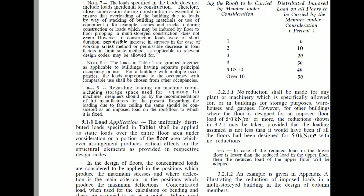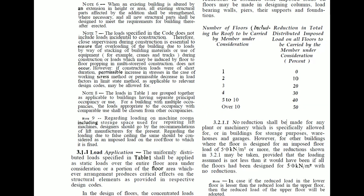However, for other buildings where the floor is designed for an imposed load of 5 kN/m² or more, the reduction shown in Clause 3.2.1 may be applied, provided that the loading assumed is not less than it would have been if all the floors were designed for 5 kN/m² with no reductions. So a minimum of 5 kN/m² must be considered across all floors, and in that case live load reduction as per Clause 3.2.1 can be applied.